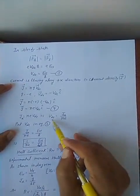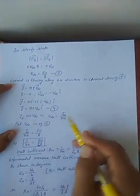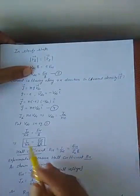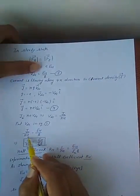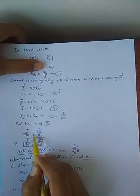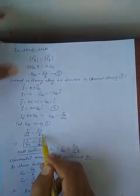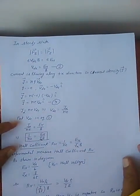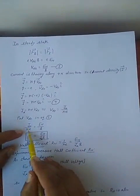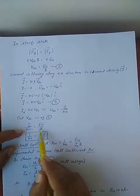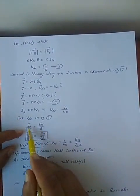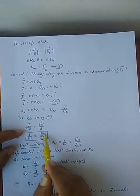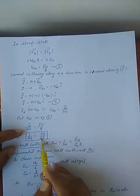Now, this value of v_dE = J_x / Ne is substituted into equation number 3, where v_dE = E_H / B. Rearranging by cross multiplication, we get: 1/(Ne) = E_H / (J_x · B).